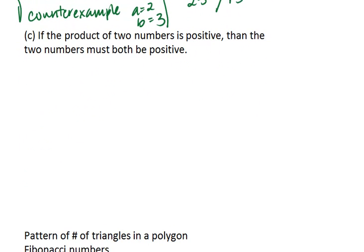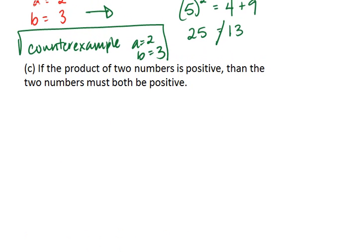How about our next example? If the product of two numbers is positive, then the two numbers must both be positive. So this statement is saying that if I have a number times another number, then their product c, if c is positive, then a and b are both positive. Take a moment, try to come up with a counterexample.